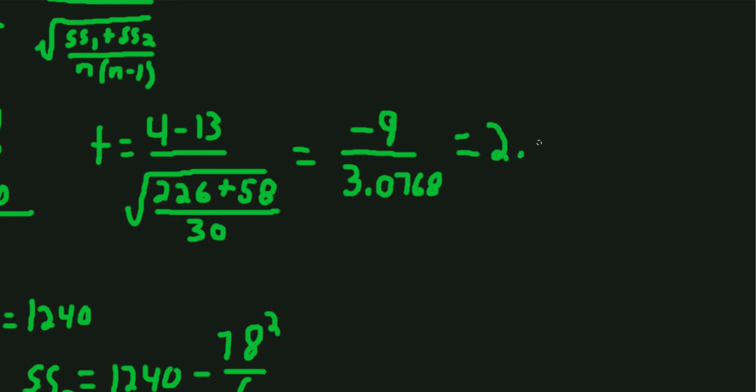So negative 2.9 is our T observed. Now with degrees of freedom of big N, which would be the total sample size, which here is 12 minus 2, we'll have degrees of freedom of 10.